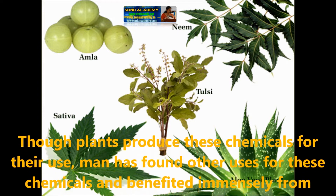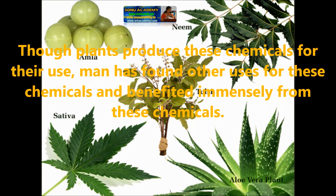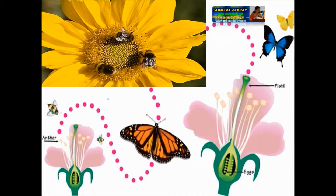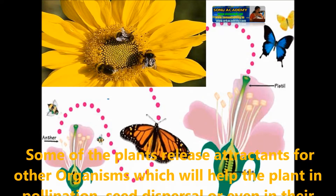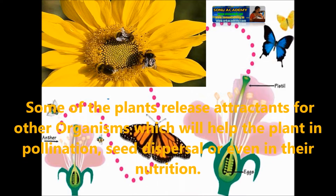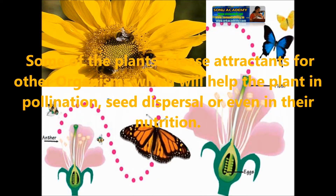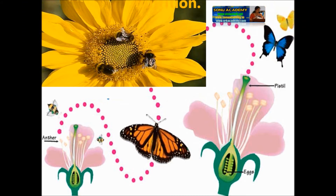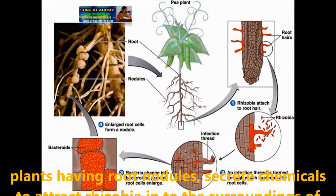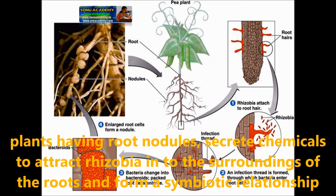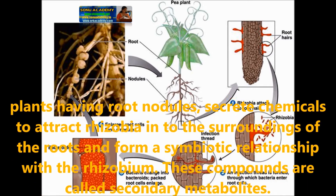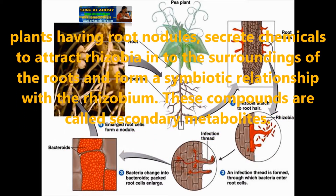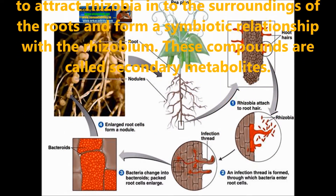Though plants produce these chemicals for their own use, man has found other uses for these chemicals. Some plants release attractants for other organisms which help the plants in pollination, seed dispersal, or even in their nutrition. For example, plants having root nodules secrete chemicals to attract rhizobia into the surroundings of the root and form a symbiotic relationship with the rhizobium.